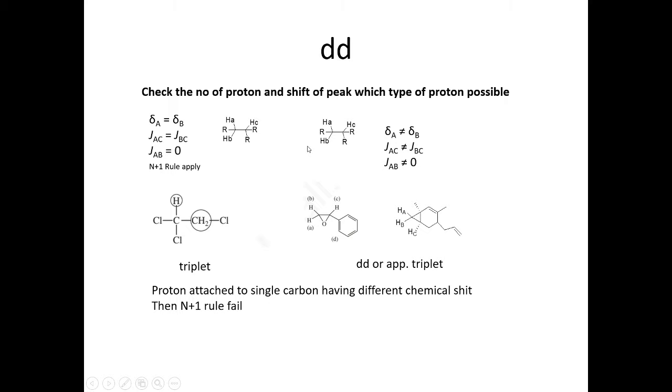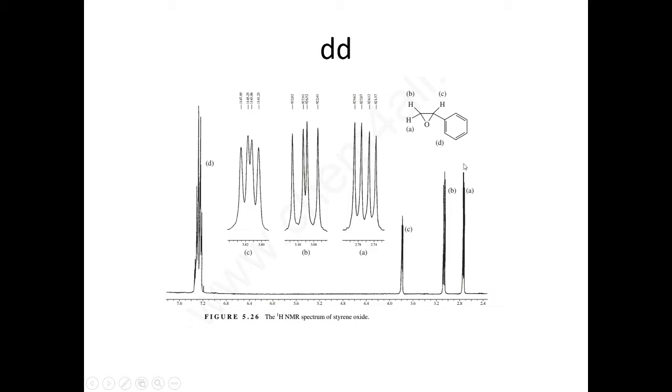Here is the styrene oxide NMR. See here, HA comes here and HB is coming here around 3.3. These two protons have different chemical shifts, so obviously it's not going to split the C proton as a triplet. It splits into a doublet of doublet.